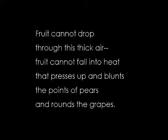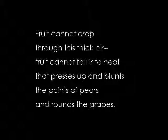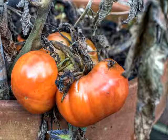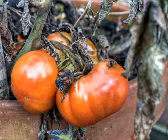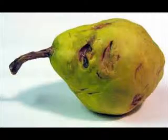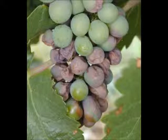The speaker goes on to say: 'Fruit cannot drop through this thick air. Fruit cannot fall into heat that presses up and blunts the points of the pears, and rounds of the grapes.' He is simply saying that fruit doesn't grow very well in hot weather — the fruit can't drop because it is unable to become ripe enough. It is simply too hot for the fruit to grow properly and the heat is causing them to become warped and practically inedible. The fruits are developing imperfections: the tips of the pears are soft and the grapes aren't round and plump.